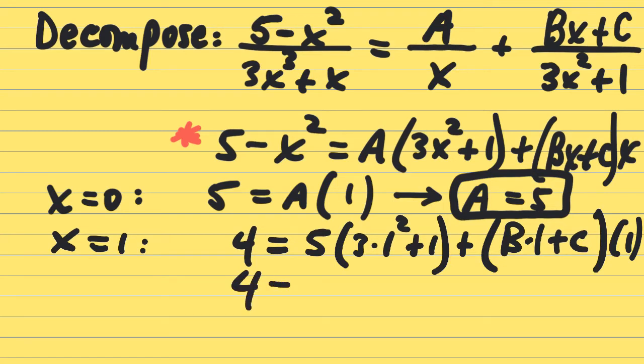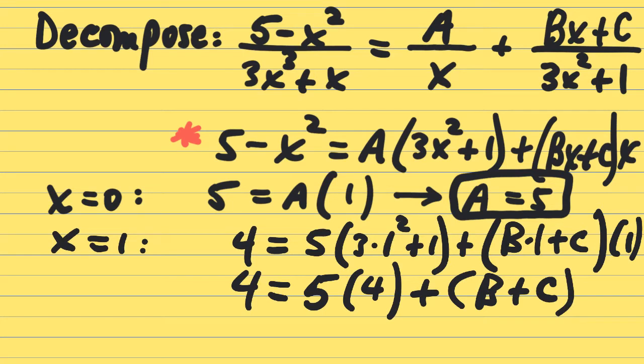So where we're at at this point is four equals five times, in the parentheses, one squared is one times three is three plus one is four. Progress forward, b times one plus c, that's b plus c, times one stays the same. And that gets us to b plus c has to have a sum of negative 16.